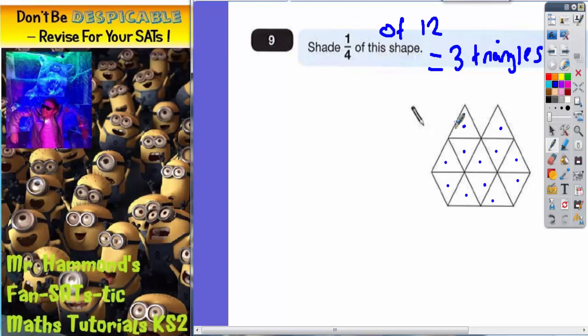It can literally be any three. So we can shade in that one, that one, and that one. As you can see in this example, those three triangles are all touching each other.